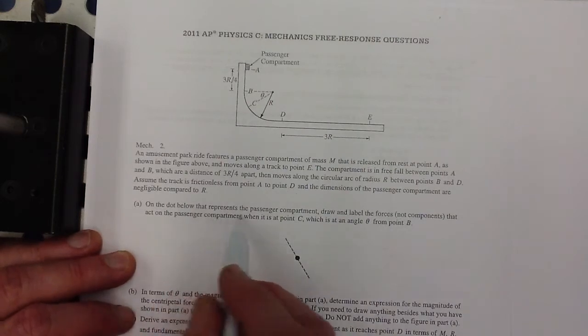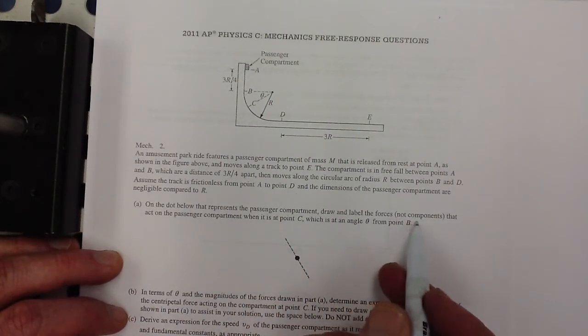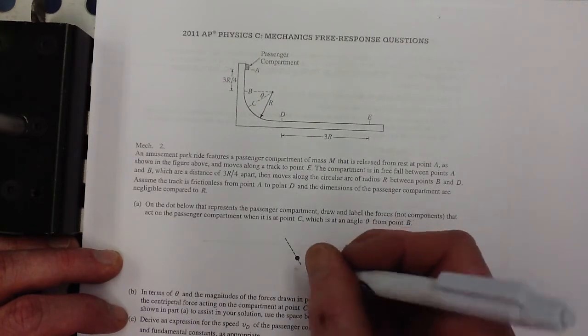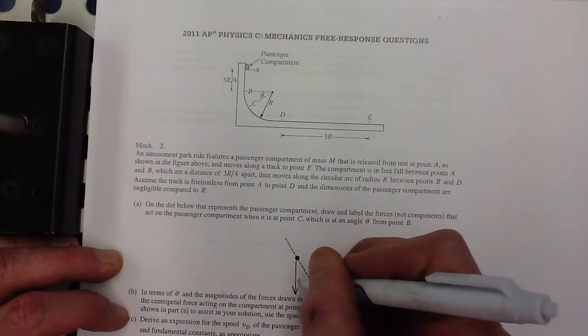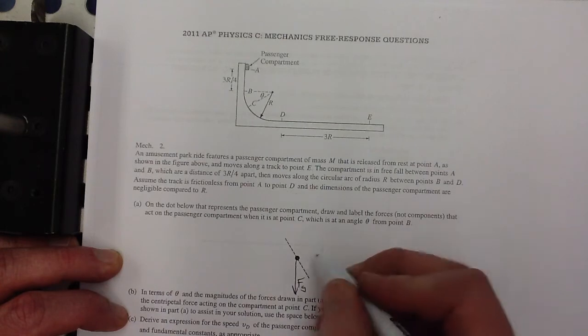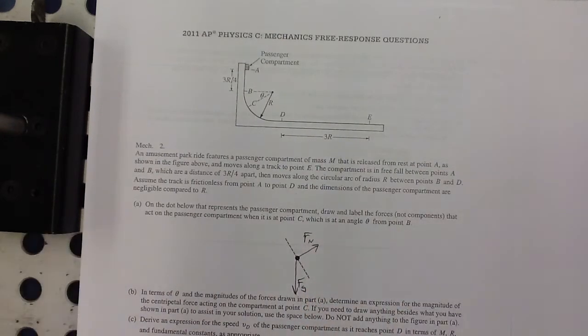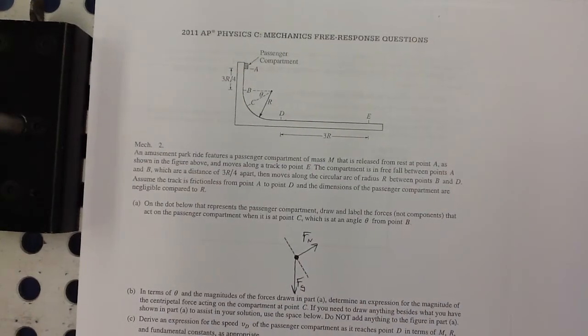Okay, so on the dot below represents the passenger compartment. Draw and label the forces, but not the components that act on the passenger car. Well, there's gravity, of course. And there's a normal force. And that's it.